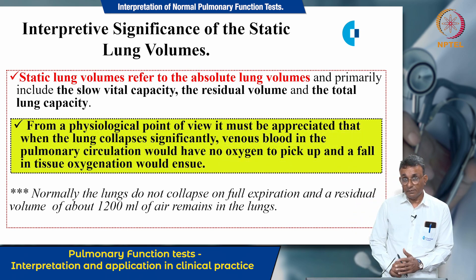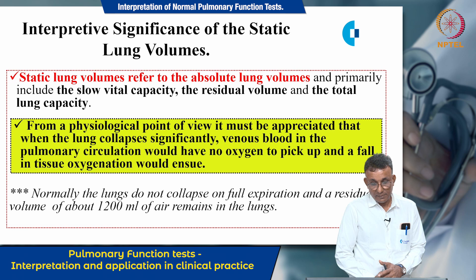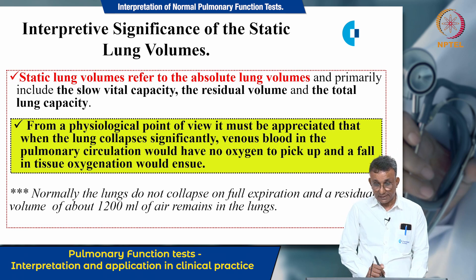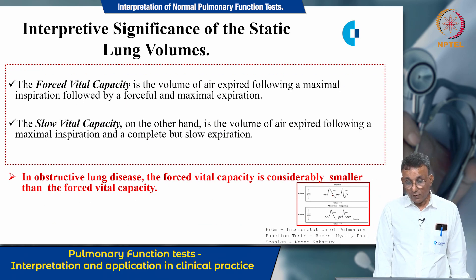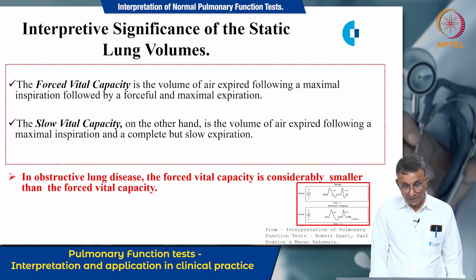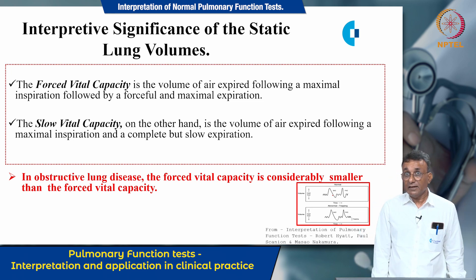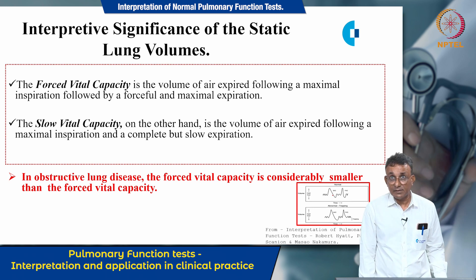From a physiological perspective, when the lungs collapse significantly, venous blood in the pulmonary circulation would have no oxygen to pick up, and a fall in tissue oxidation will result. The forced vital capacity is the volume of air expired following a maximal inspiration and a forceful, maximal expiration, while the slow vital capacity is the volume of air expired following a maximal inspiration and a complete but slow expiration. The key difference is the expiratory phase — forceful in FVC, gentle in SVC.